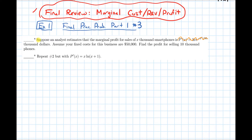The question reads: suppose an analyst estimates that the marginal profit for sales of x thousand smartphones is p'(x) = x·ln(x+1), which is the marginal profit function in thousand dollars. Assume your fixed costs for this business are fifty thousand dollars. Find the profit for selling ten thousand phones.